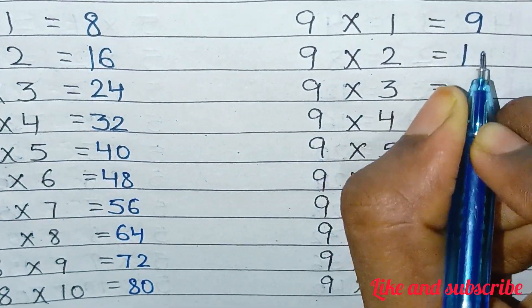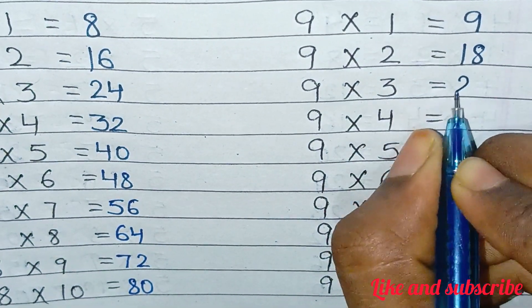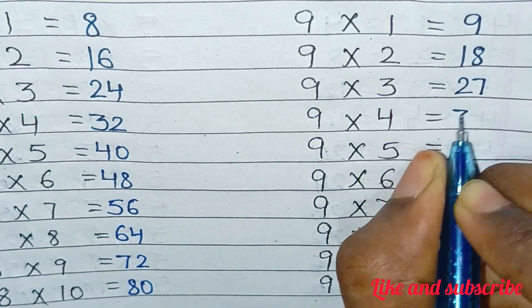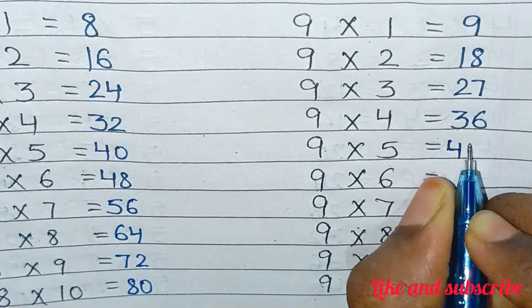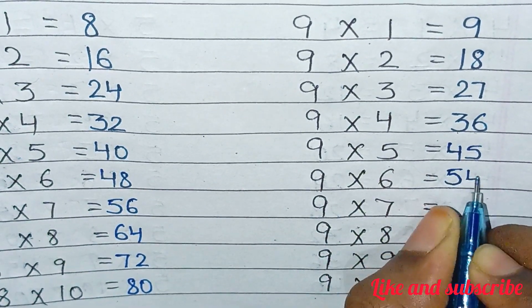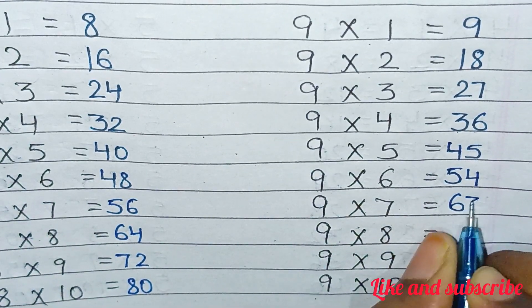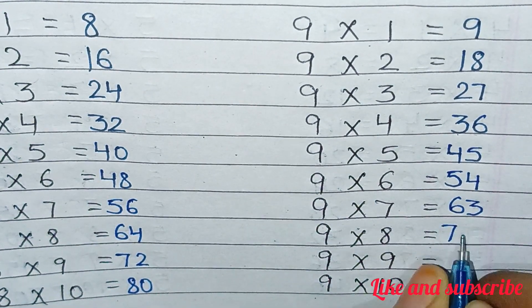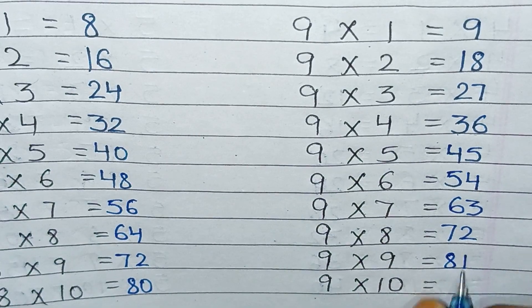9×1=9, 9×2=18, 9×3=27, 9×4=36, 9×5=45, 9×6=54, 9×7=63, 9×8=72, 9×9=81, 9×10=90.